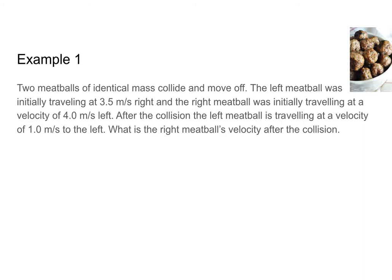Let's look at the first example. Two meatballs of identical mass collide and move off in their own directions. The left meatball was traveling at 3.5 meters per second to the right, and the right meatball was initially traveling at 4.0 meters per second to the left. After the collision, the left meatball is traveling at 1.0 meters per second to the left, and we need to find the velocity of the right meatball after the collision. On the before side, I have my two meatballs, L and R. L is traveling at 3.5 meters per second to the right, and R is traveling at negative 4 meters per second. They both have mass m.